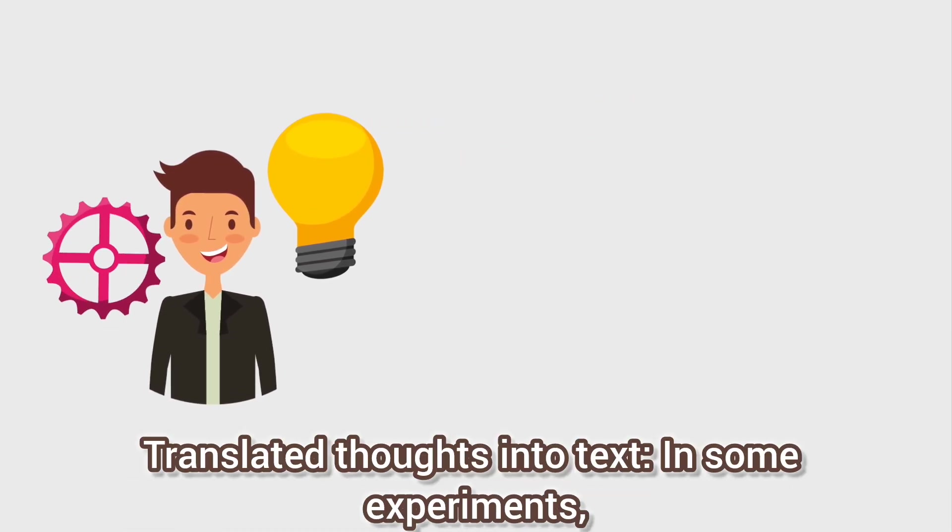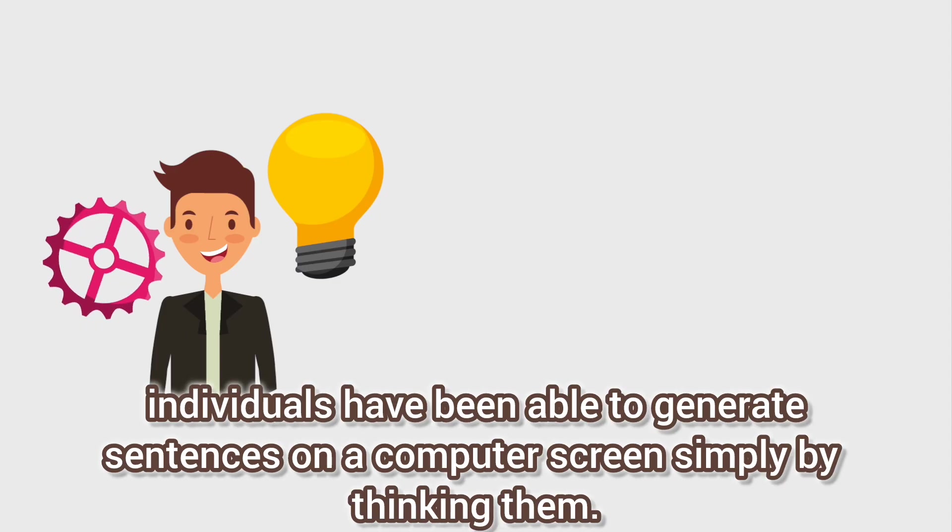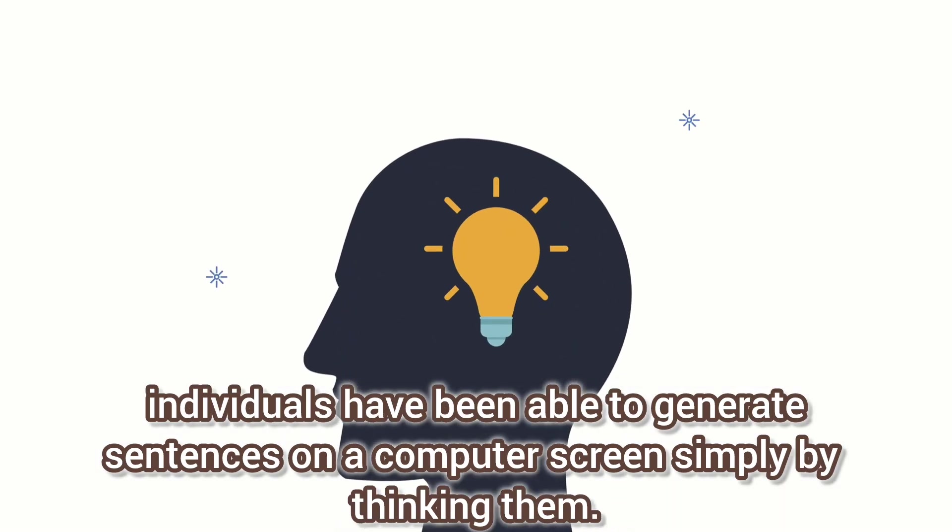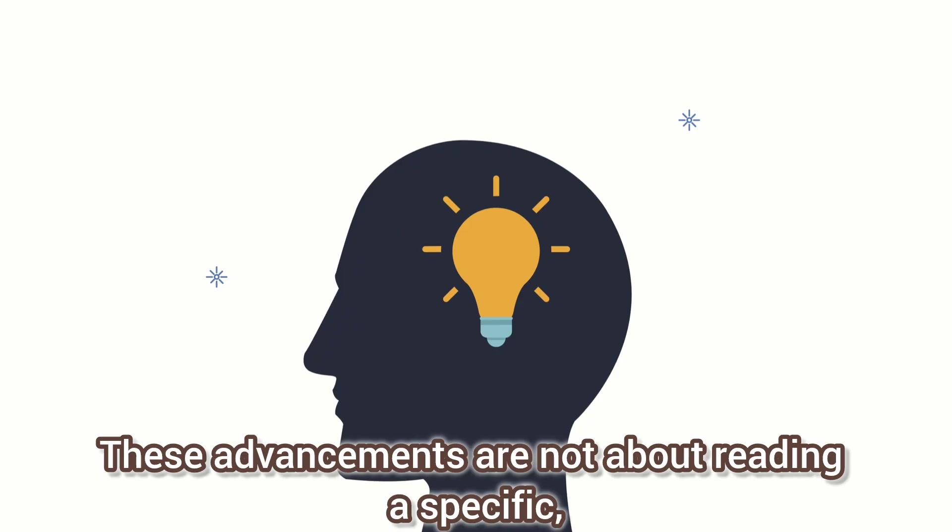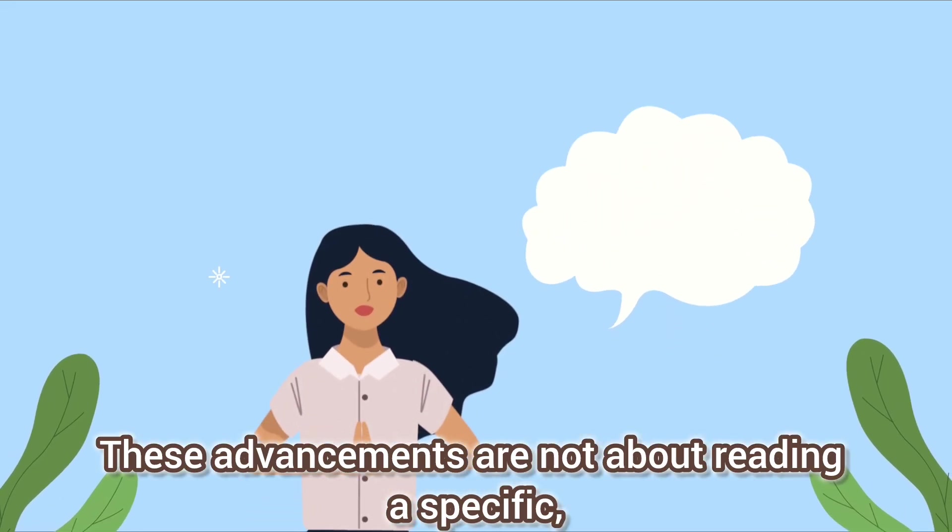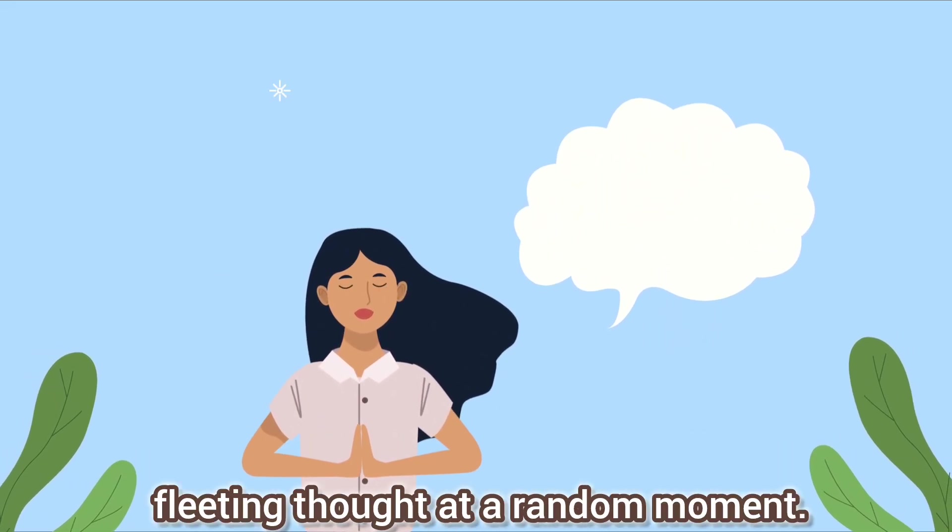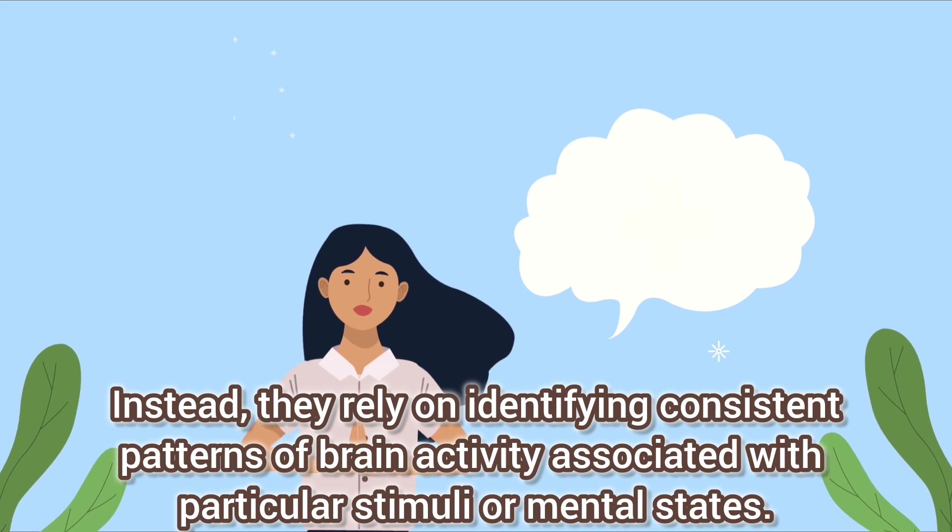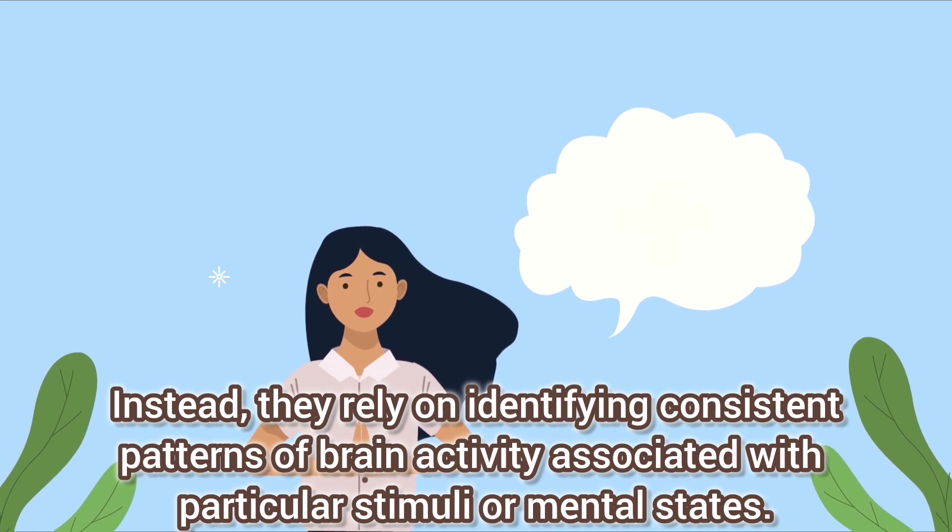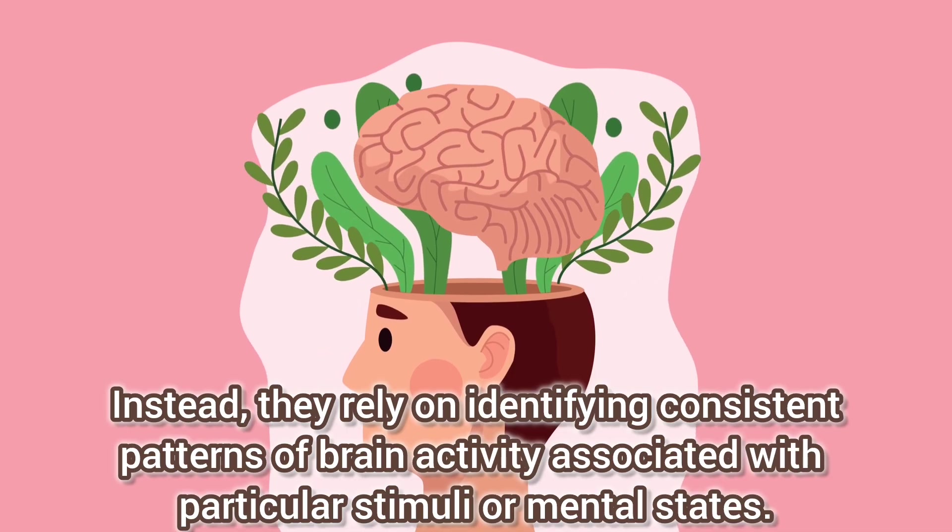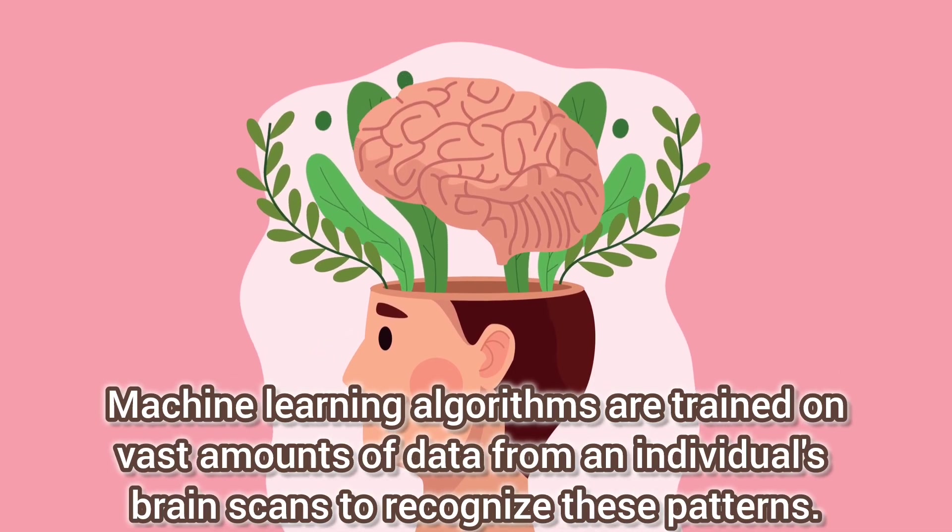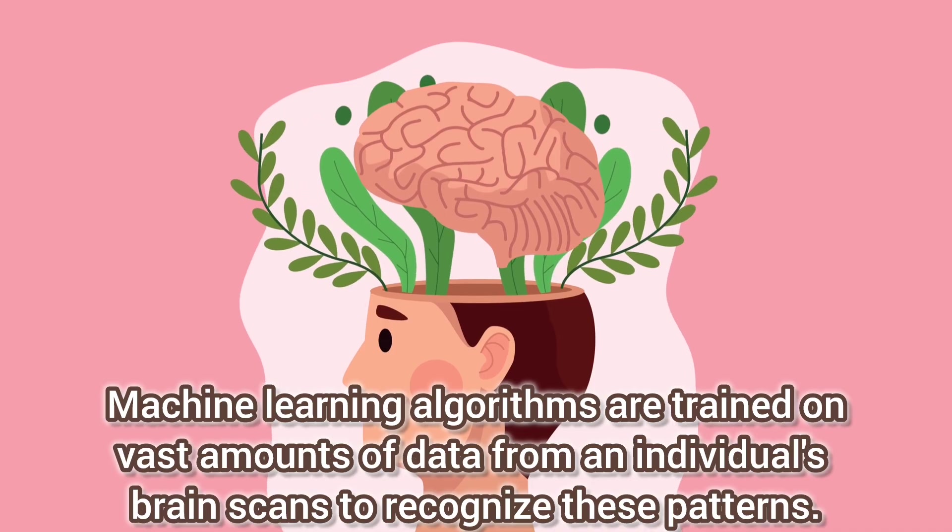Translated thoughts into text: in some experiments, individuals have been able to generate sentences on a computer screen simply by thinking them. These systems, however, require extensive and personalized training for each user. These advancements are not about reading a specific fleeting thought at a random moment. Instead, they rely on identifying consistent patterns of brain activity associated with particular stimuli or mental states. Machine learning algorithms are trained on vast amounts of data from an individual's brain scans to recognize these patterns.